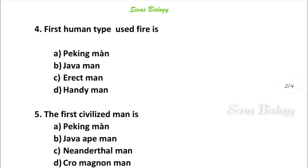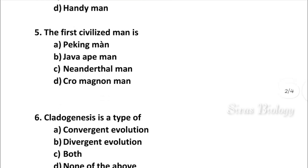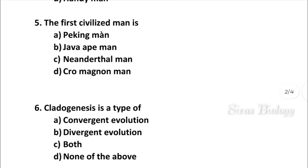Question number 5: Who was the first civilized man? Options: Peking man, Java man, Erect man, Neanderthal man, Cro-Magnon man. The answer is Cro-Magnon man.